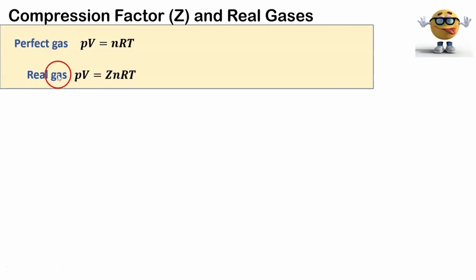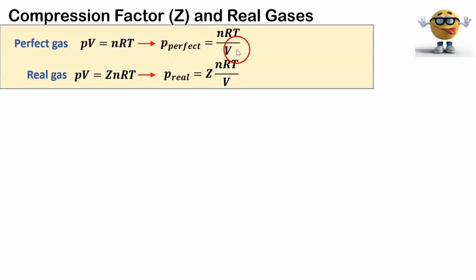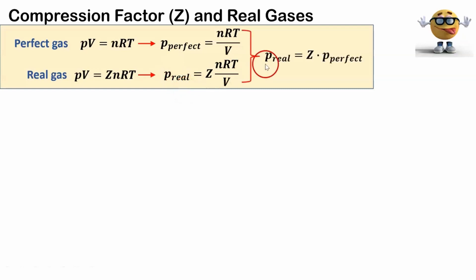Now, we're going to compare perfect and real gases. For a perfect gas, our equation of state is PV equals NRT. For a real gas, it's also PV equals NRT, except with this compression factor Z in here. If we solve for the pressure for both, pressure of a perfect gas is NRT over V, and that of a real gas would be NRT over V with this compression factor. We can compare them by saying the pressure of a real gas is equal to Z times the pressure of the perfect gas, which is NRT over V.